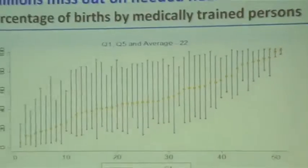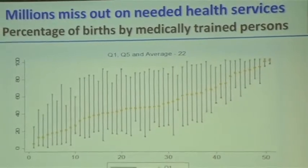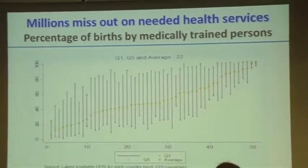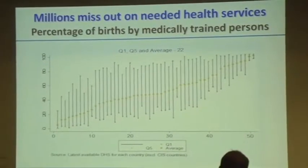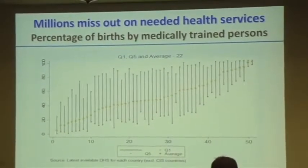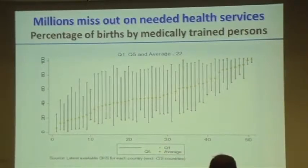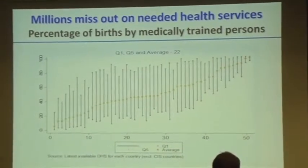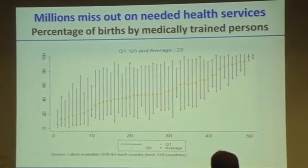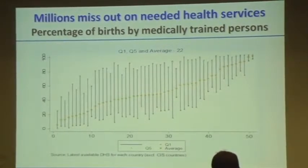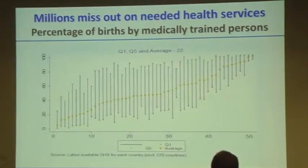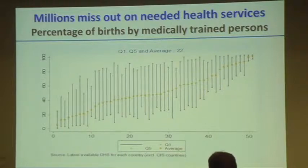Which health services should be included? This example shows about 50 countries with data by quintile — the lower quintile and the upper quintile — on the percentage of births attended by medically trained persons. You can see inequality within each country. You would want very high coverage with no discrimination across quintiles. This is what we want, and it's probably one of the things that should be in your benefit package.